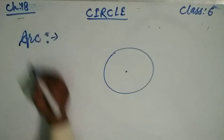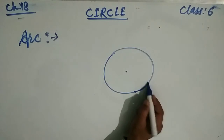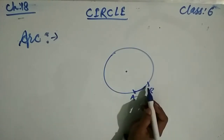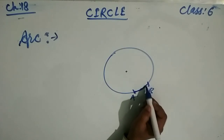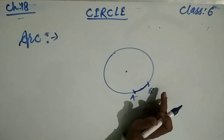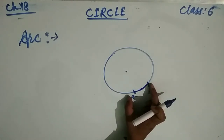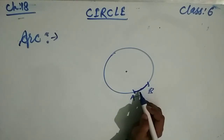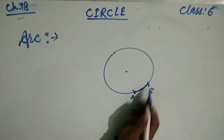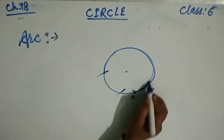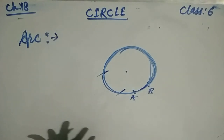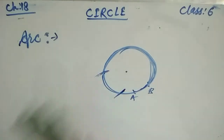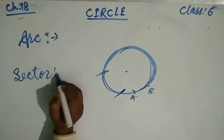The arc of a circle is any continuous part of a circle. For example, arc AB includes all continuous points on the circle between A and B. We can define an arc as a continuous piece of a circle. Any part of the circle is called an arc, and the complete circle is also considered a total arc.